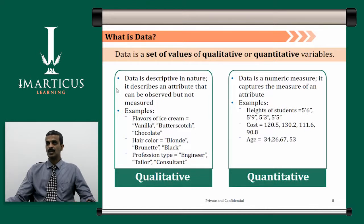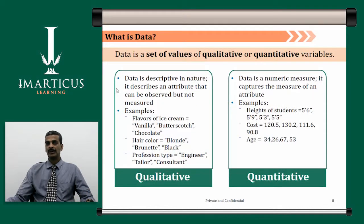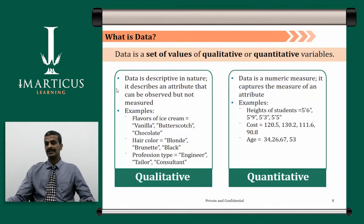In some other cases, you have data that can be measured in terms of numbers — that is called quantitative data. This data is numeric in measure; it captures the measure of an attribute. For example, the height of students — approximately 5 feet 6 inches, 5 feet 9 inches, 5 feet 3 inches — or cost of a particular item — 120.5, 130.2, 111.6, 90.8 — or age of a person — 34, 26, 67, 53. All these data points can be measured, whereas qualitative data can only be observed or experienced, not measured. This is how we classify data into qualitative and quantitative types, which are the two broad categories.